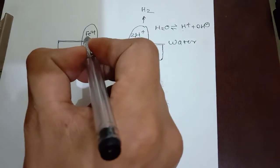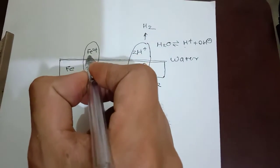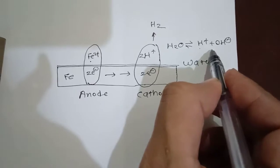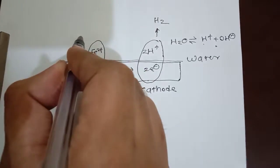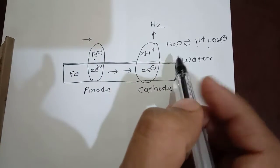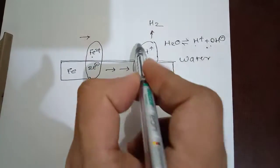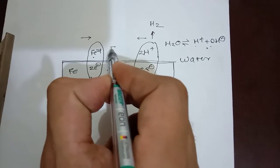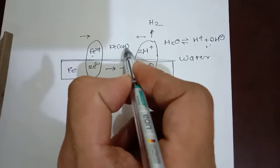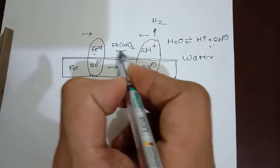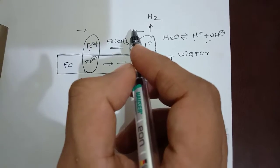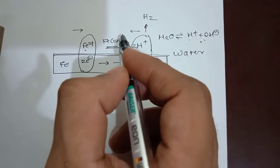Now we have Fe2+ ions and OH− ions in solution. The Fe2+ ions will travel toward the cathode and OH− ions will travel toward the anode, and they will combine to form ferrous hydroxide. This is the first corrosion product which will form.